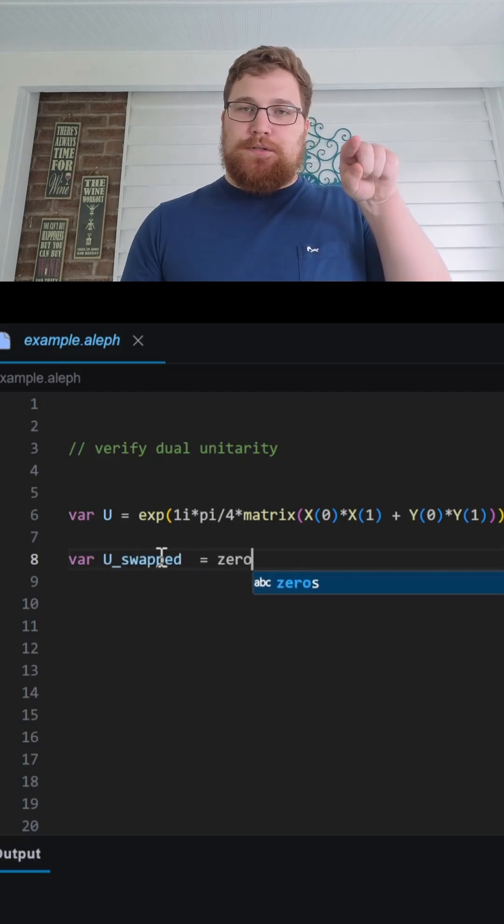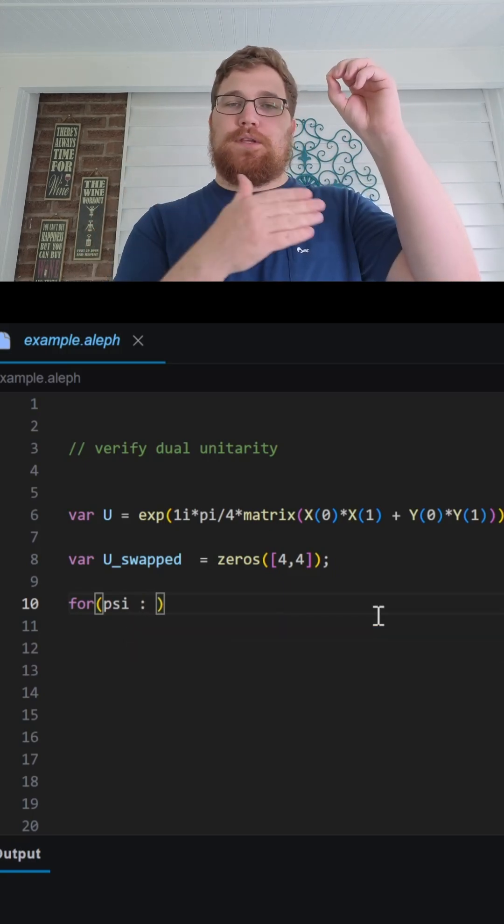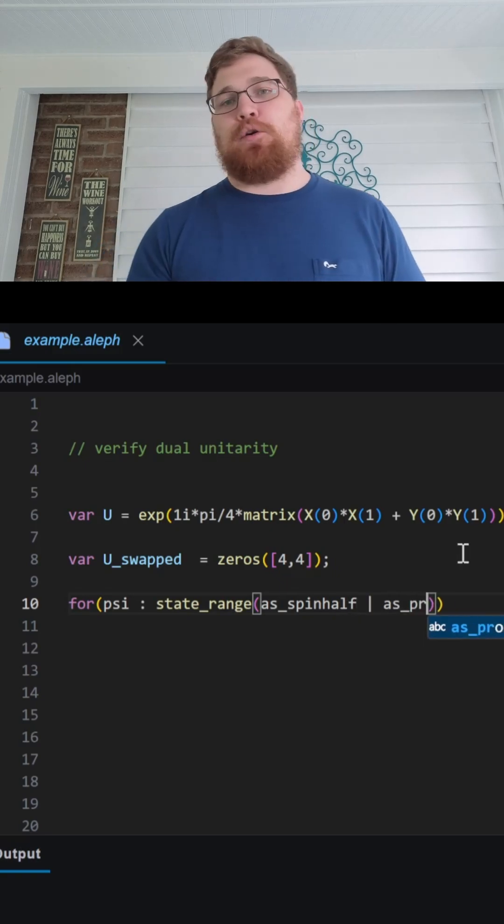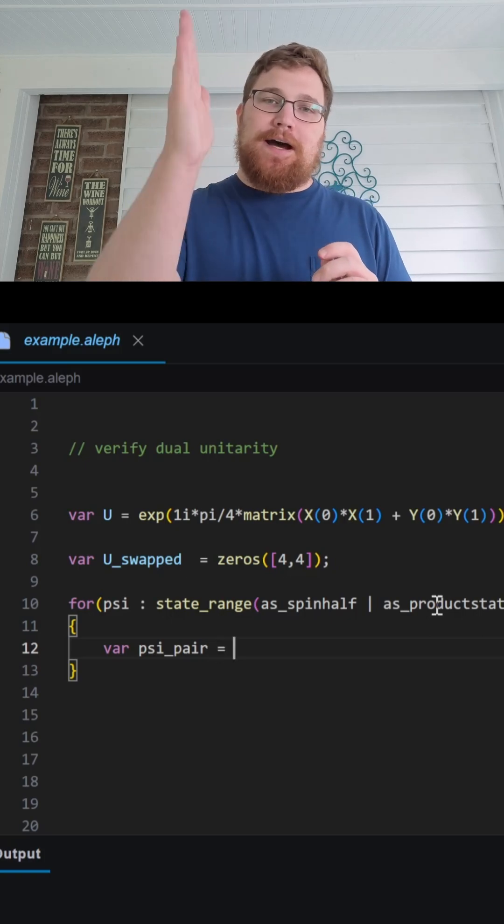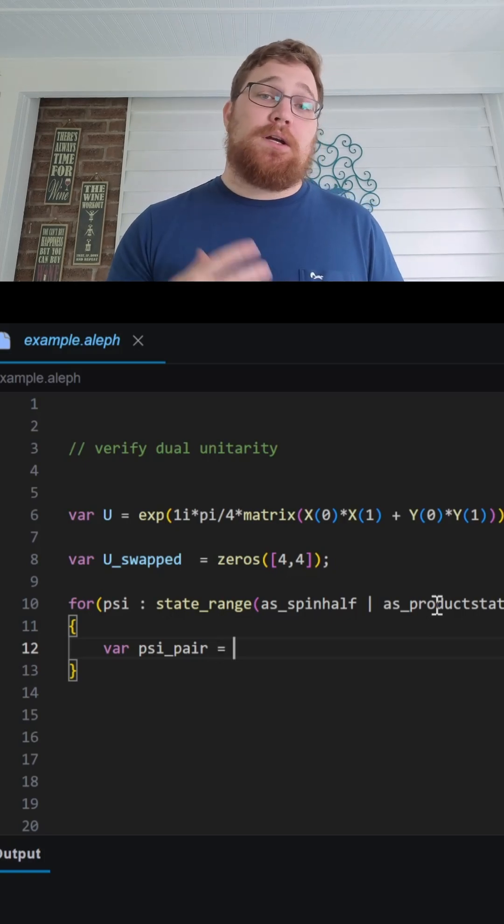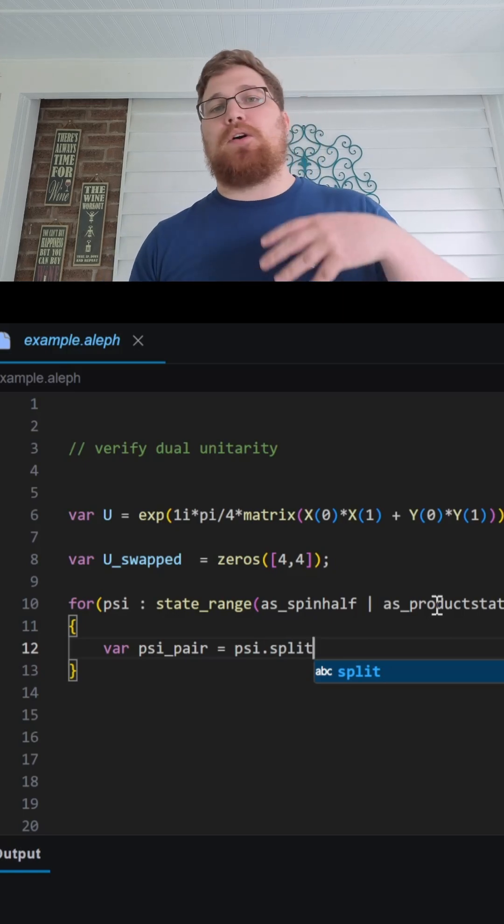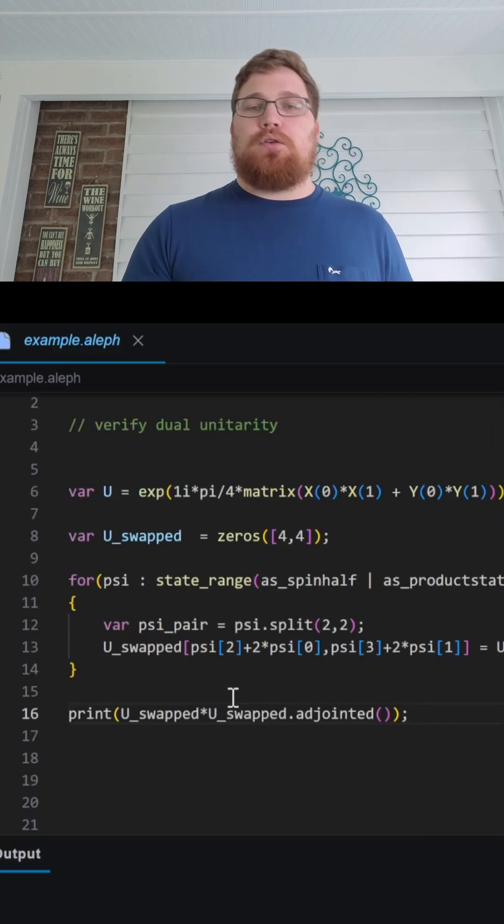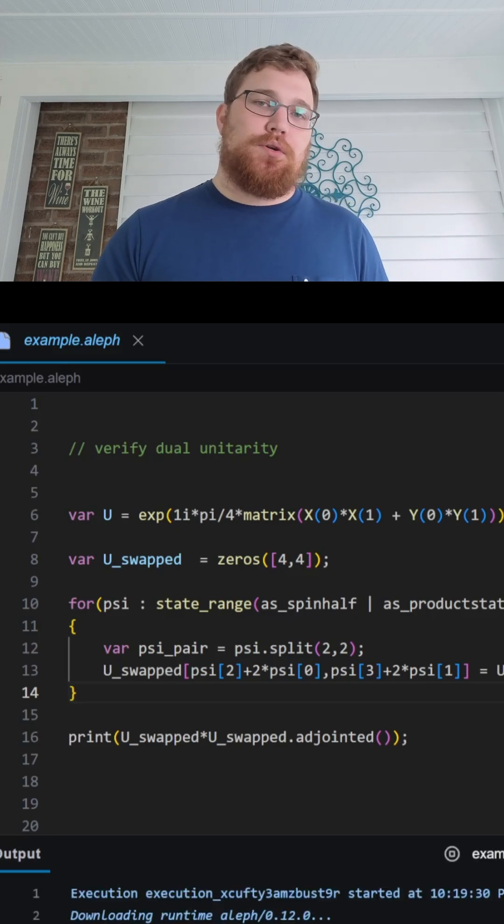Now, labeling the inputs 0, 1, 2, 3, then we can start pairing 0 and 2 for the space direction, and 1, 3 in the space direction as inputs and outputs. It's almost like now we have qubits on the time lattice. Doing the space-time swap can be accomplished by doing a for loop where we loop over all possible inputs and all possible outputs. And inside USwapped, we are going to put in the correct matrix element from our original unitary U.